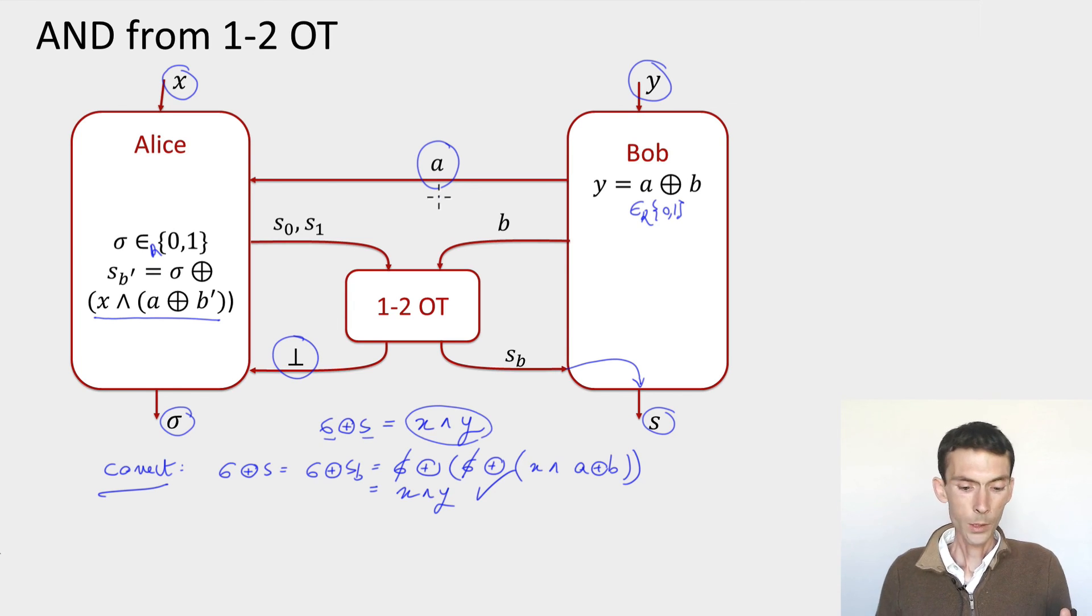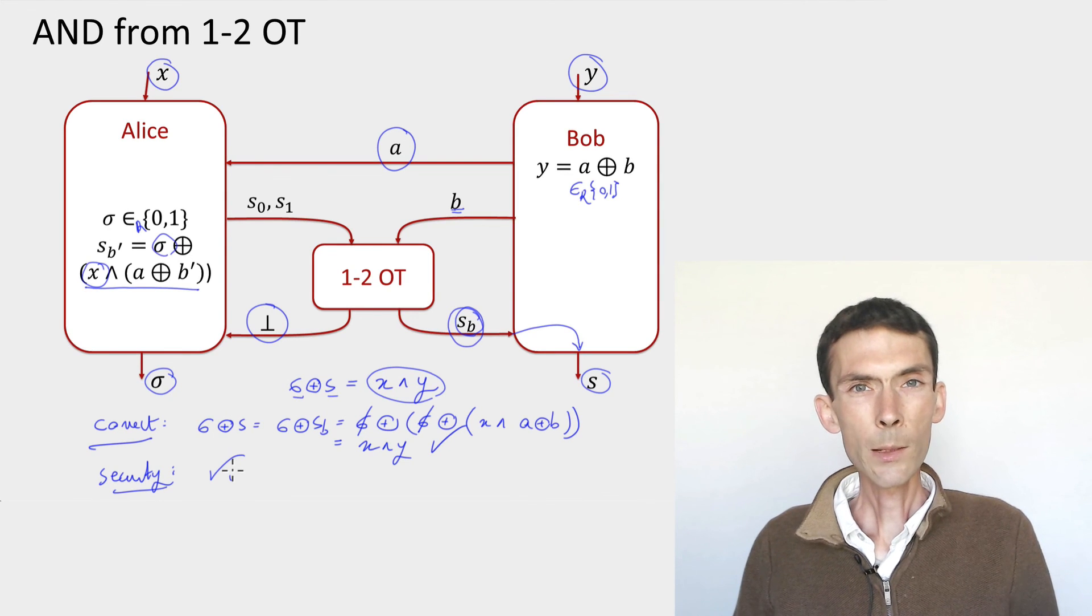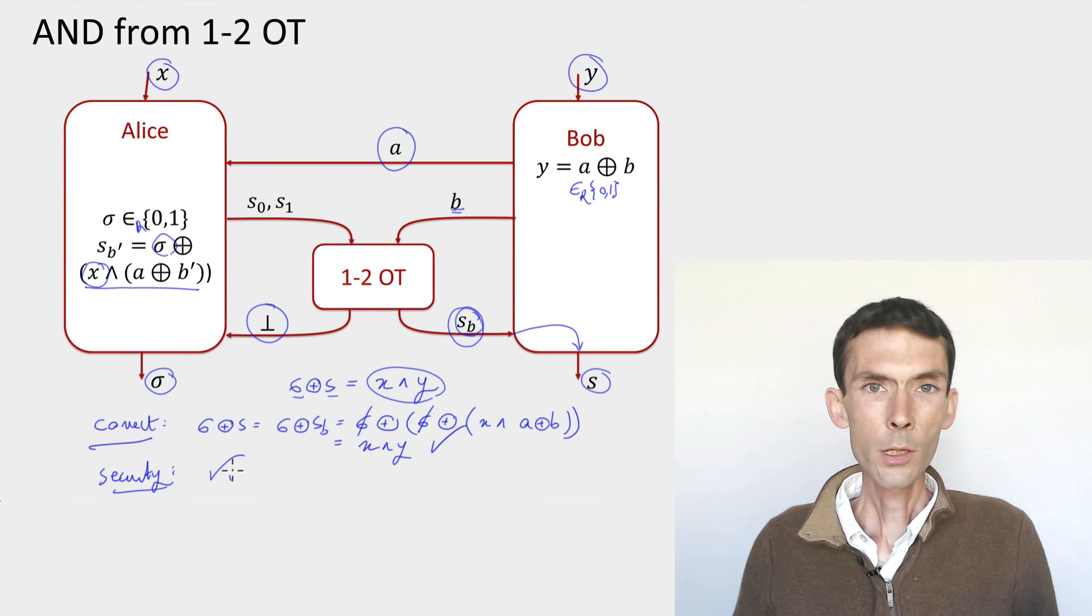How about cheating Bob? What does Bob get from Alice? Nothing. He gets this string S here that he gets to choose. Because the cheating Bob could input any B he wants in this OT box. So he gets to learn either S0 or S1, one of the two. He can choose which. But what are these S0 and S1? They have some information about Alice's input here. Except, honest Alice took parity with a random bit sigma. So in fact, both S0 and S1 individually are uniformly random. And so Bob here gets to learn a uniformly random bit independent of Alice's input. As long as he only learns one of her two strings, the protocol is secure from his point of view. So protocol is also secure against cheating Bob. So that's it. If you can do OT, you can do the AND. And using similar idea, you can compute any multiparty function securely.